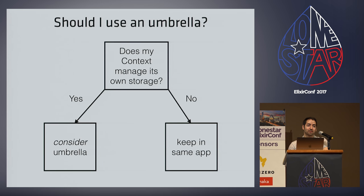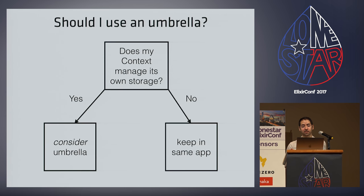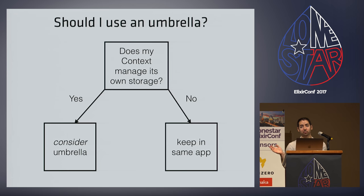In response to the last question, there's a talk at 3:30 that's exactly about having a monolith, breaking it up into an umbrella. Because at the end of the day, these ideas aren't going down an uncanny valley of new design patterns — the big idea is we can have modules and functions that have well-defined clear APIs. No matter what, everyone can agree that's a good thing. That's the starting point we're pushing people towards, and how you grow from there depends on your application.